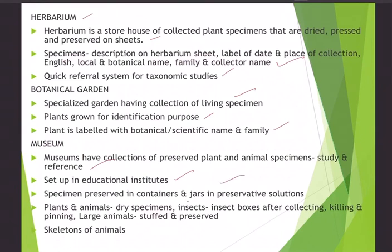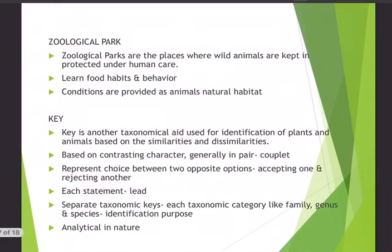Museums have collections of preserved plant and animal specimens for study and quick reference, set up in educational institutions. Specimens are preserved in containers and jars; insects are collected in insect boxes and pinned; large animals are stuffed. Zoological parks are places where wild animals are kept under human care to study their food habits and behavior in conditions resembling their natural habitat.